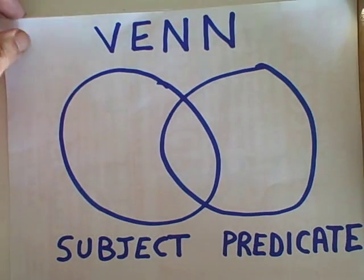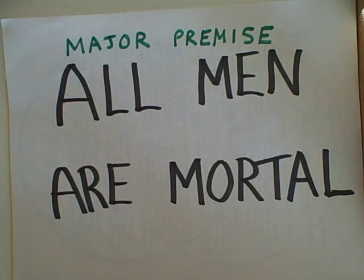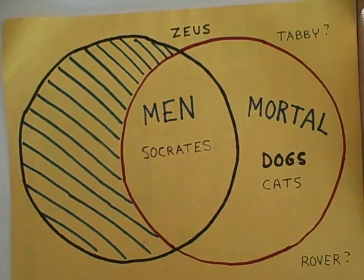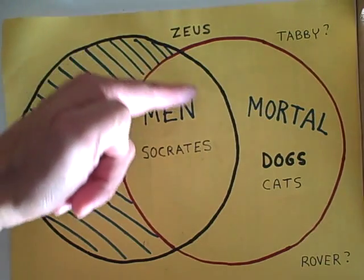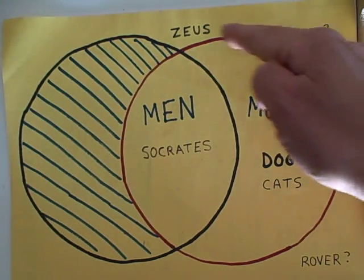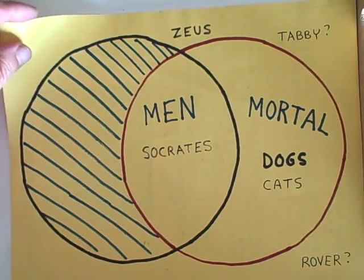Let's take a look at a major premise: all men are mortal. Men would be the subject, mortal would be the predicate. So our overlapping circles would look like this. This big circle on the left represents men. This circle on the right represents everything that is mortal, that is going to die someday.